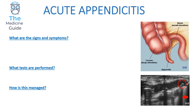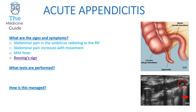Acute appendicitis: children will typically present with abdominal pain initially around the umbilical area which then radiates to the right iliac fossa. The abdominal pain will increase with movement — it might be described that the child can't hop on their right leg because of excruciating abdominal pain. There may be a mild fever, and Rovsing's sign can be elicited during examination — this is when the doctor palpates the left iliac fossa and the child complains of pain in the right iliac fossa.